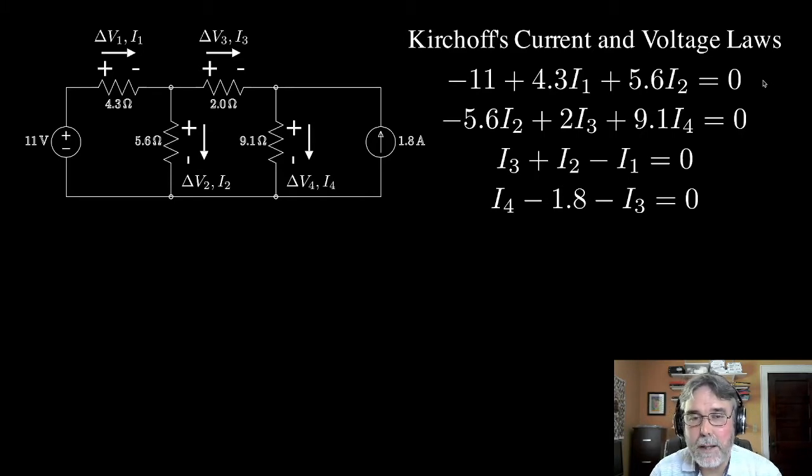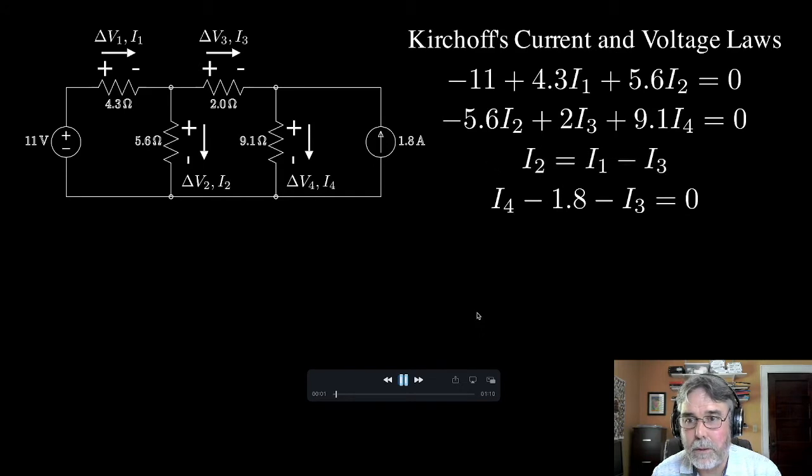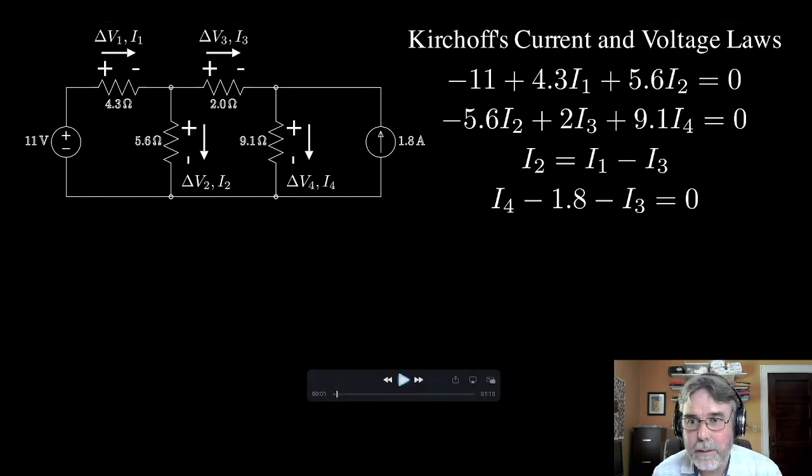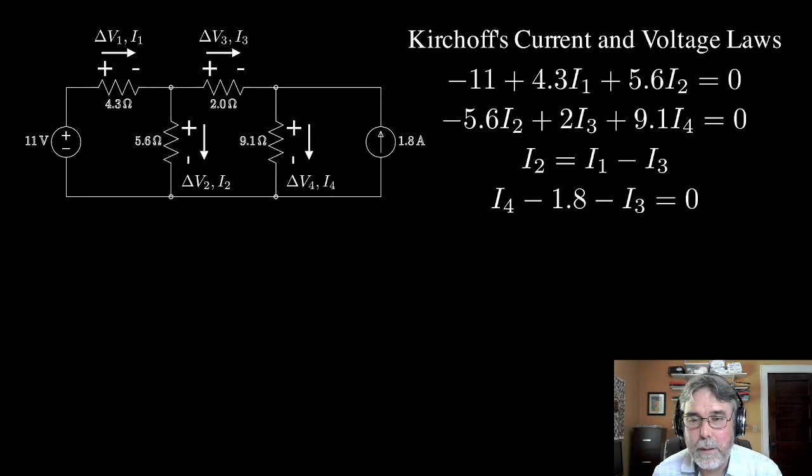So let's go ahead and look at these guys. The first thing I want to point out is that we can immediately get rid of two variables here by replacing I2 and I4 with I1 and I3. Well, how the heck are we going to do that? Well, the way we'll do that is to look at those bottom two equations and notice that I can write I2 as the difference between I1 and I3.